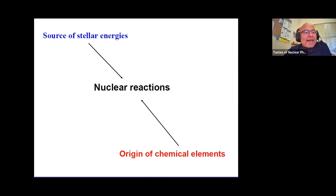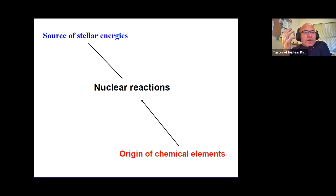Nico's question: We discussed that a Nature paper claims neutron star mergers have temperatures of 800 billion Kelvin corresponding to 69 MeV. If this is the case, it seems impossible that these could be nurseries of elements - most nuclei would be almost evaporated, leaving only protons and neutrons, so you wouldn't have the material needed to create an r-process.